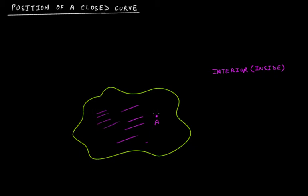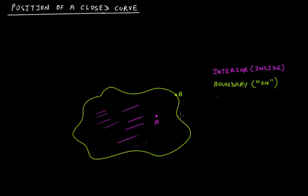Next, you can see that this is the boundary of this closed curve. This will be called the boundary. If there's any point, let's say point B on the boundary, we will say that B is on the boundary of this curve.